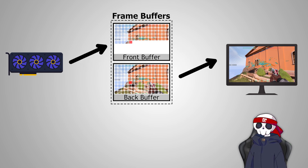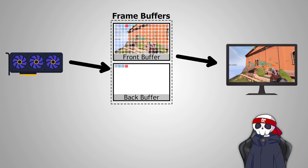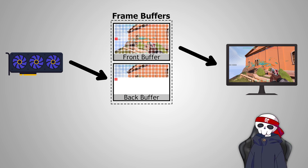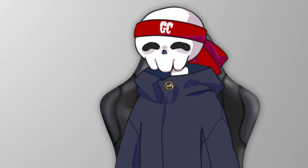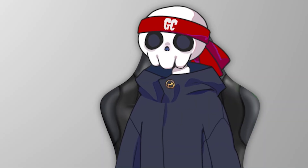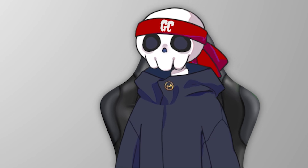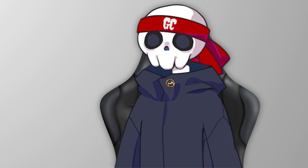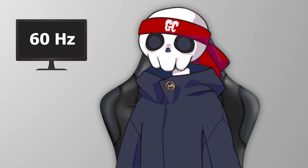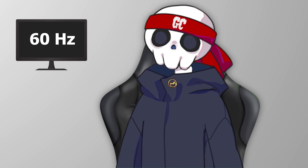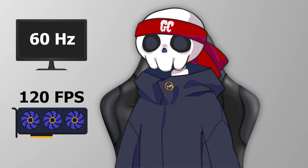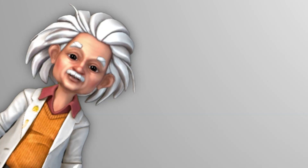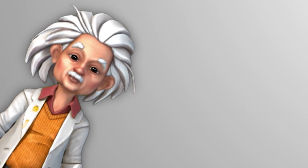This type of double-buffered setup is called double buffering. Now, let's say your GPU is producing double the frames of your monitor's refresh rate. Suppose you have a 60Hz monitor which can only show 60 frames per second, but your GPU is producing 120 frames per second.